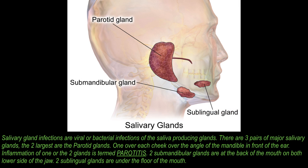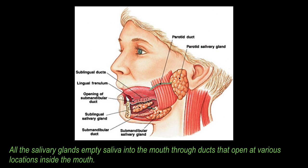Salivary gland infections are viral or bacterial infections of the saliva producing glands. There are three pairs of major salivary glands. The two largest are the parotid glands, one over each cheek over the angle of the mandible in front of the ear. Inflammation of one or two glands is termed parotitis. Two submandibular glands are at the back of the mouth on both the lower side of the jaw, and two sublingual glands are under the floor of the mouth. All the salivary glands empty saliva into the mouth through ducts that open at various locations inside the mouth.